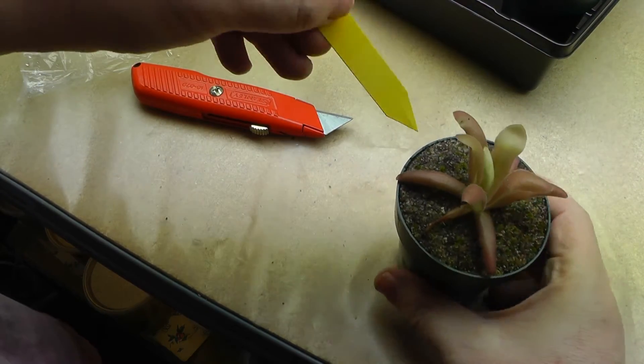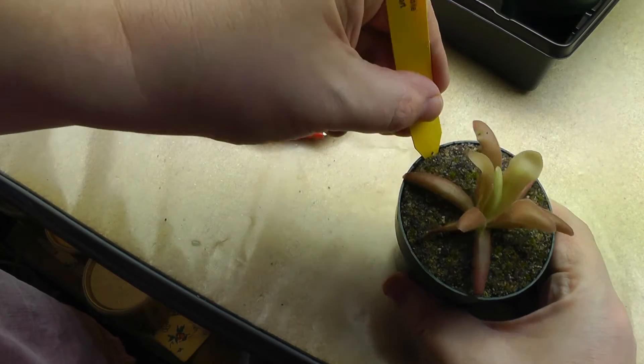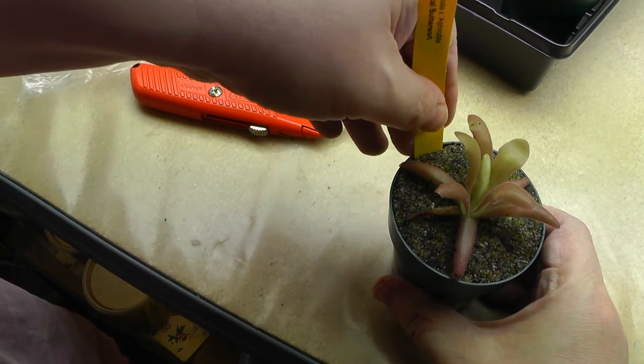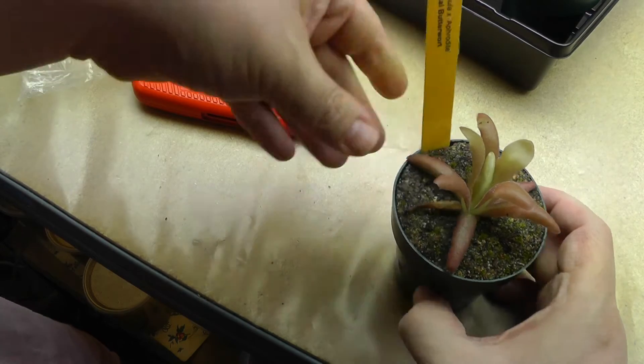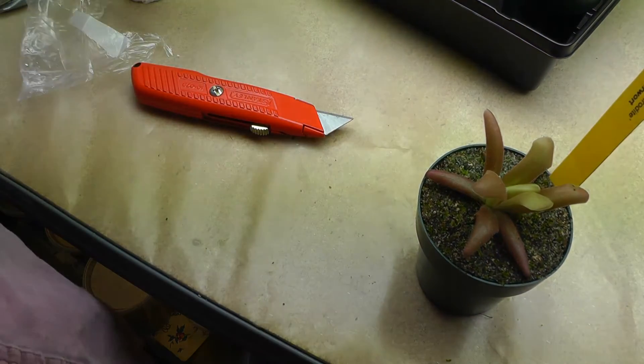You can tell their soil mix is pretty sandy. Probably about 50% sand, 50% peat. Now let's check them out.